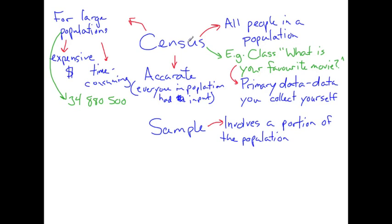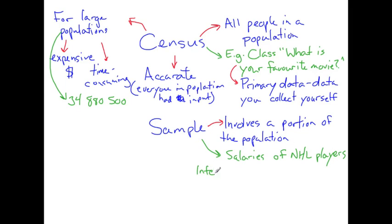For example, let's pretend that we want to find out the salaries of NHL players. Instead of surveying every NHL player, what we're going to do is use the internet to find the salaries of 10 NHL players. If we think of the population as all NHL players, these 10 players are going to be a sample of the population.